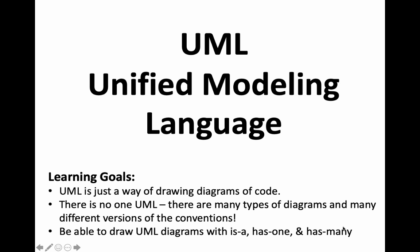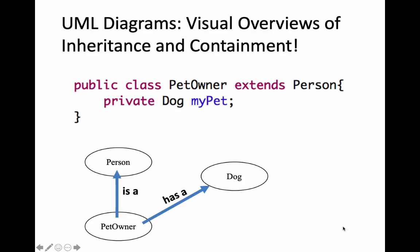Since we're going to be working with a larger code base, we're going to look at a tool called UML, or Unified Modeling Language. This helps us abstract from our code to see the relationships between our objects. There are lots of different variants of UML, and we want to focus on drawing the 'is-a' relationship, the 'has one' relationship, and the 'has many' relationship.